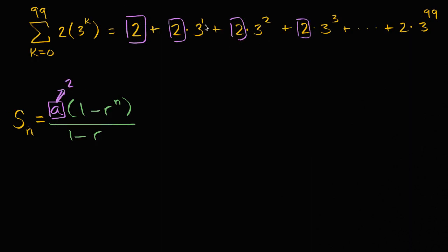What is r? Well, each successive term, as k increases by one, we're multiplying by three again. So three is our common ratio. So that right over there, that is r.